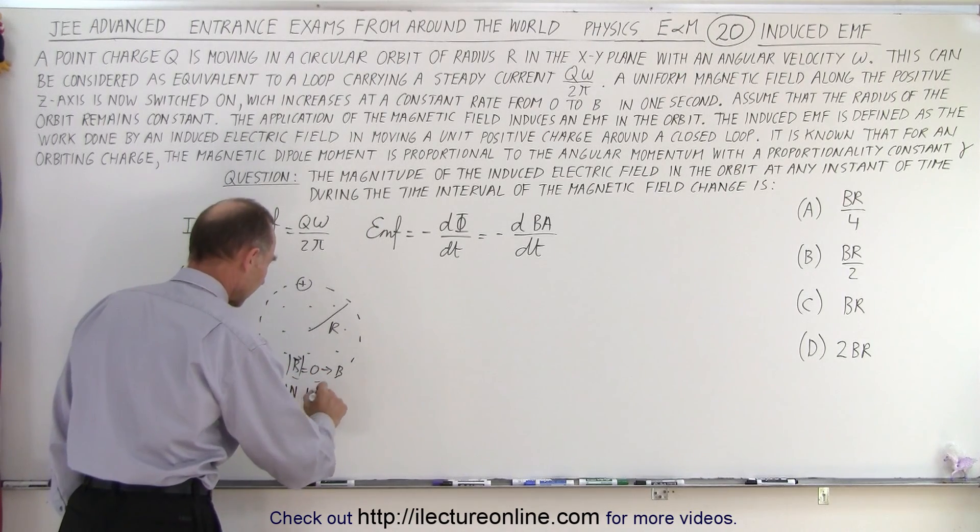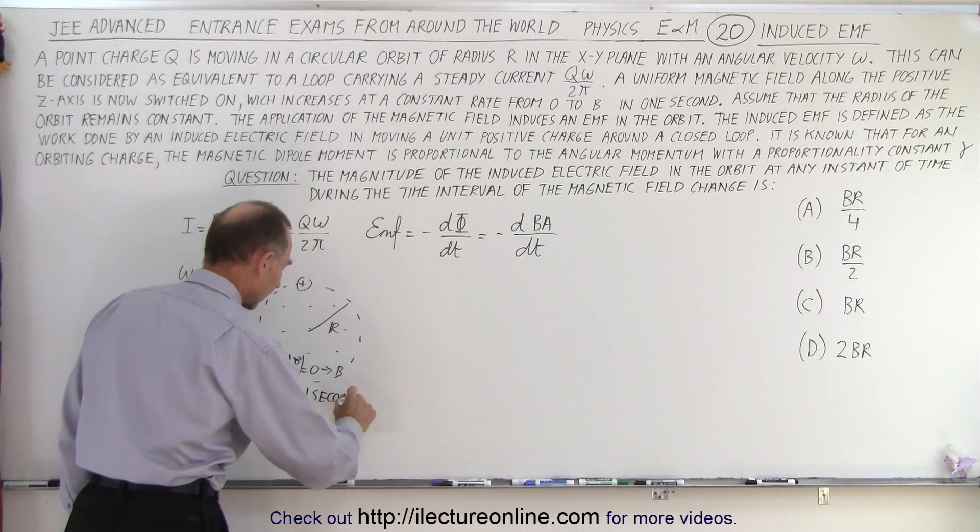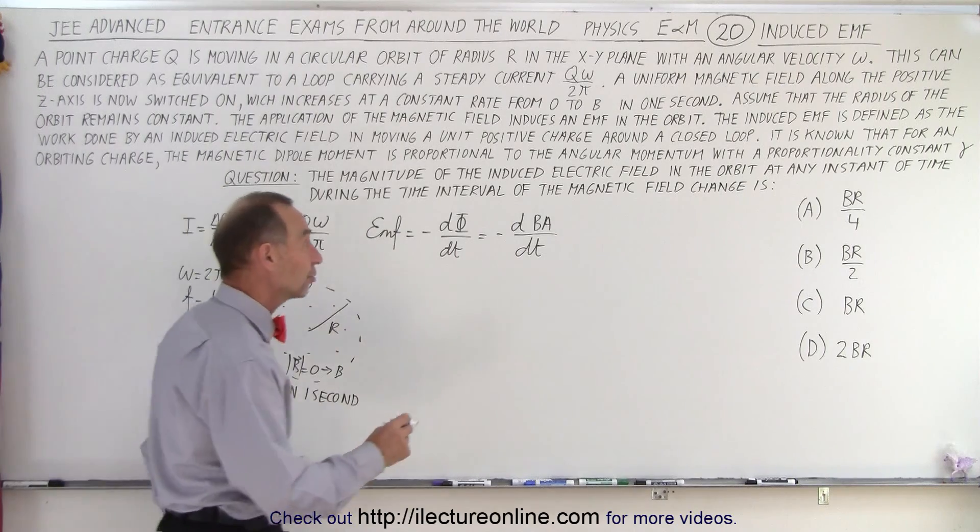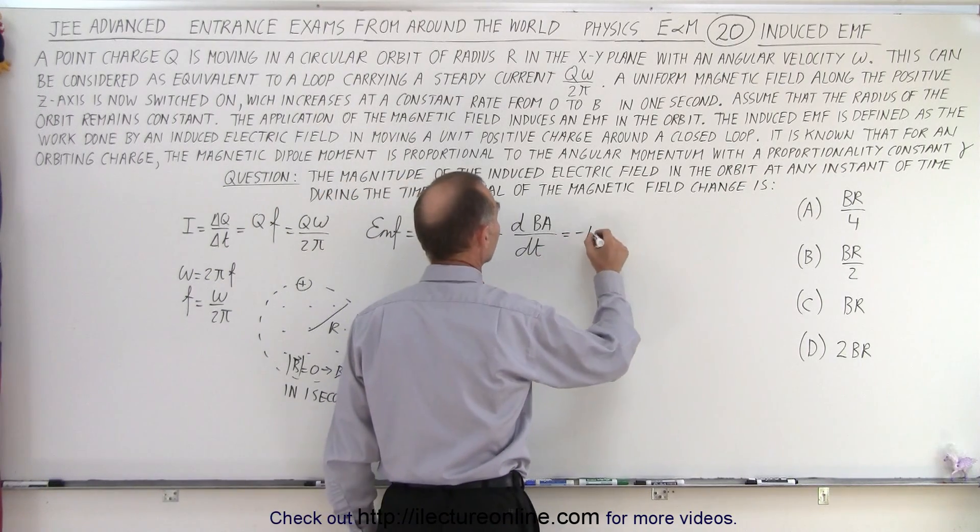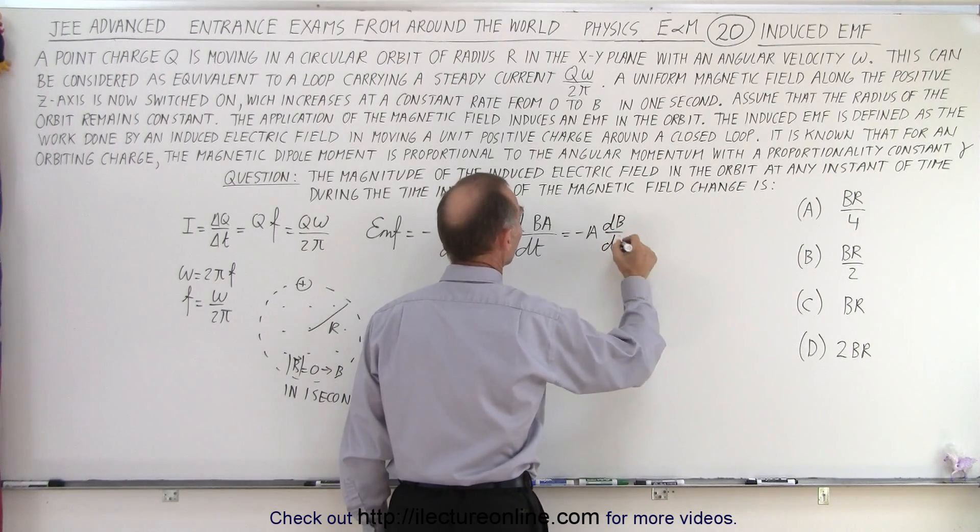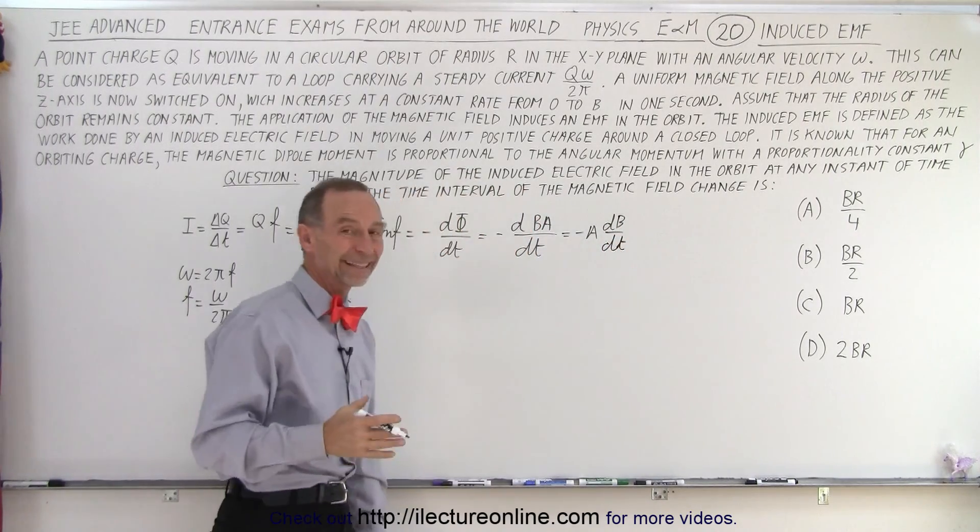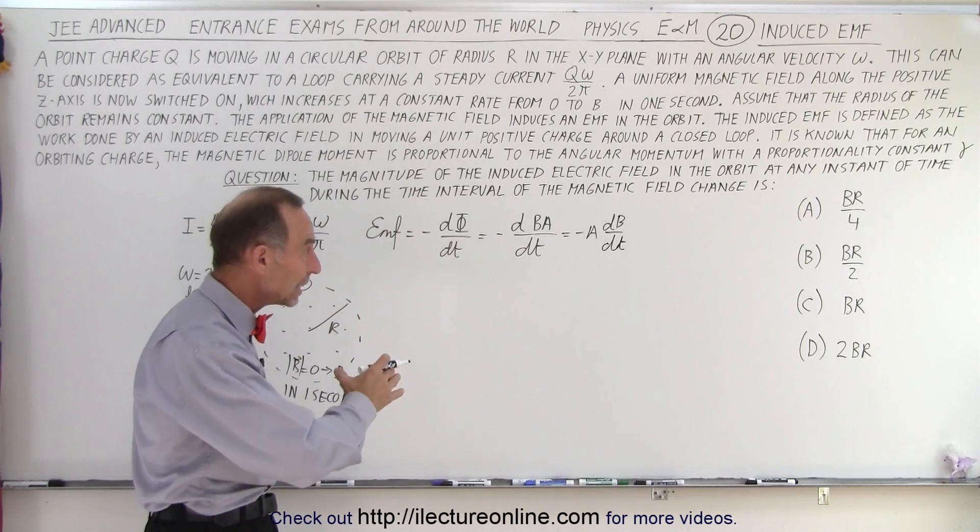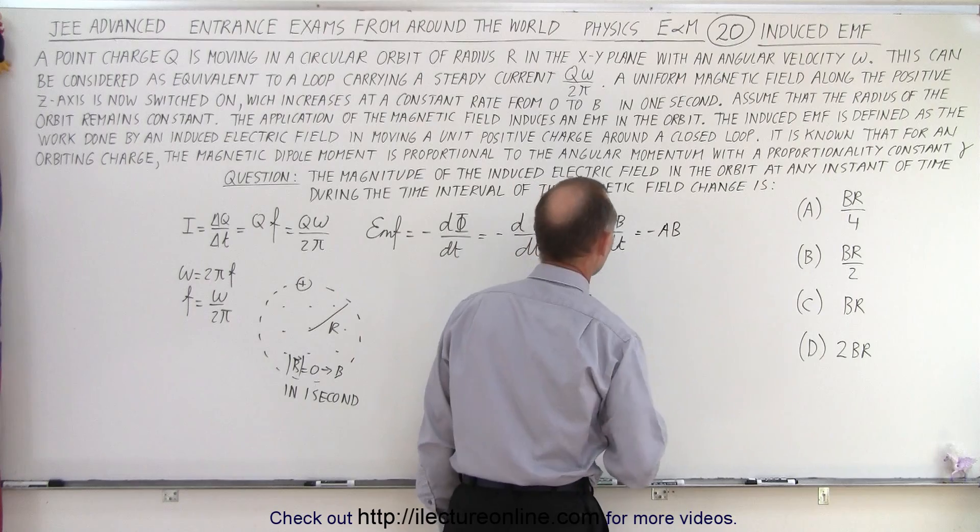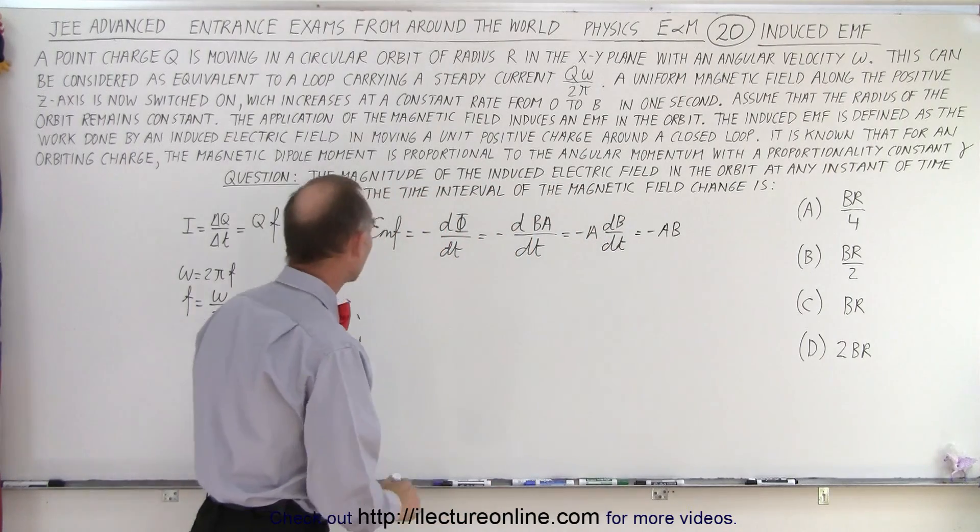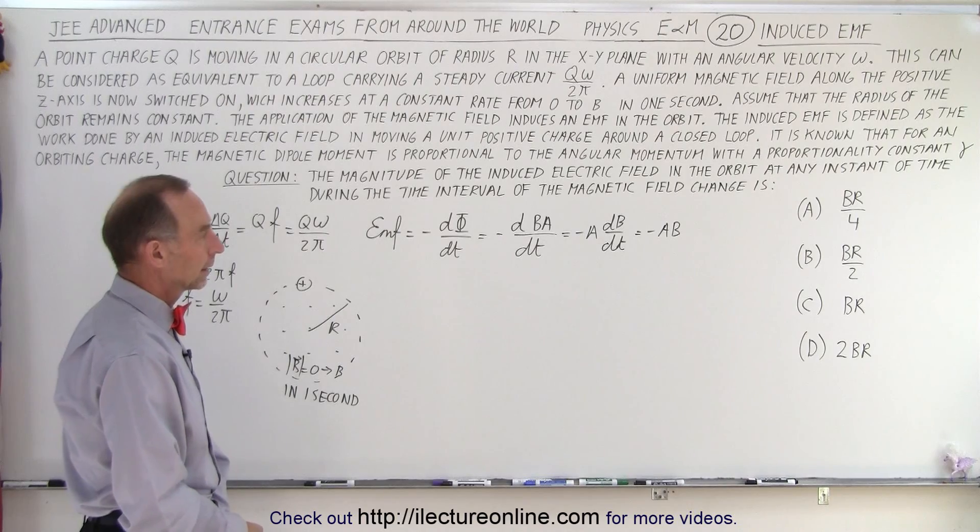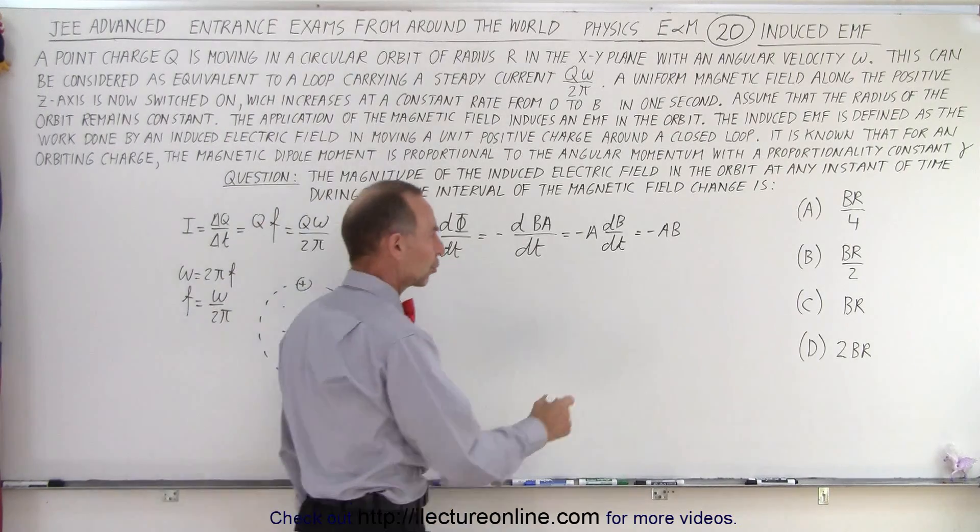So we know that the area doesn't change, only the B field changes. So this can be written as minus A times the change in the B field with respect to time, and then we realize that it's changing at a rate of B in one second. So this can be written as minus A times B per second. So that is the EMF induced. Of course the area would be πr² so we could also write this as minus πr²B.